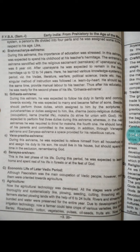Grihastha Ashrama. During this Ashrama, he was expected to follow his duty in family and commitment towards society. Now he had complete knowledge about literature, warfare, trade and all. He was expected to marry and become the father of a son.